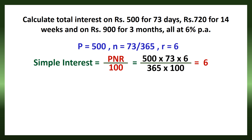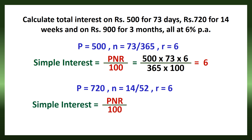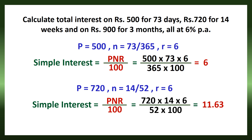Next, let us calculate the second part. P is 720, N is 14 weeks. Since a year has 52 weeks, N becomes 14 divided by 52. R is 6% per annum. Applying in the formula PNR by 100: 720 into 14 into 6 divided by 52 into 100, which gives 11.63 rupees. So, the interest for the second part is 11.63.